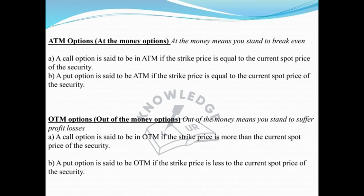The third one is OTM options — out of the money option. Out of the money means you stand to suffer losses.